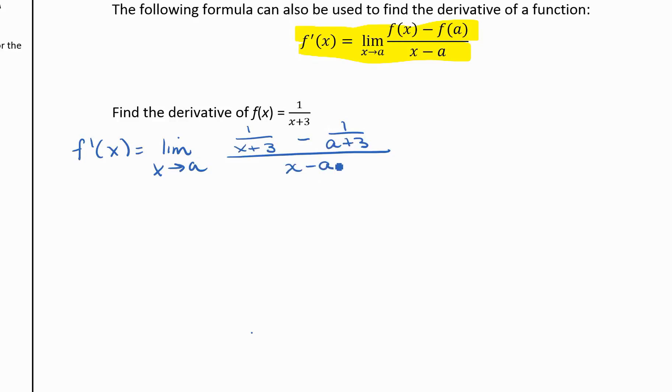We can't just evaluate this limit now because if we plugged in a for x, we would get 0 in our denominator. So we're going to have to do some simplifying. We're going to multiply this one by a plus 3 over a plus 3, and we'll multiply this one by x plus 3 over x plus 3.